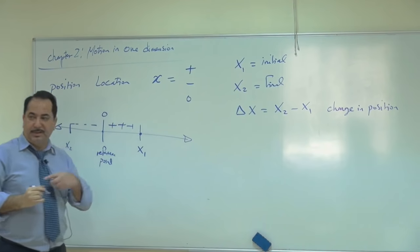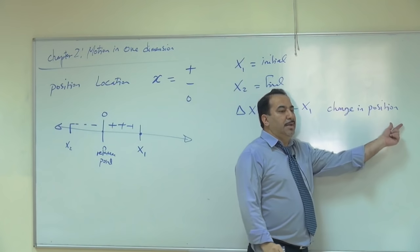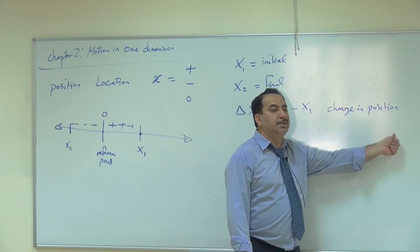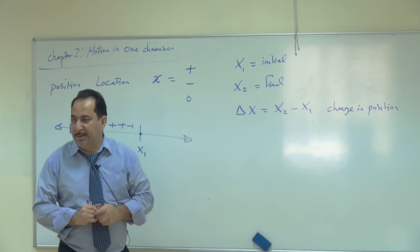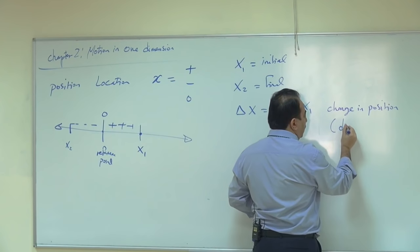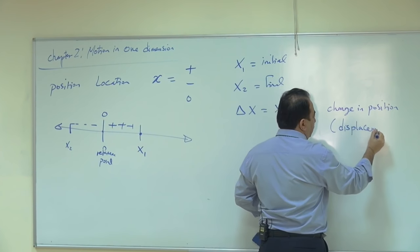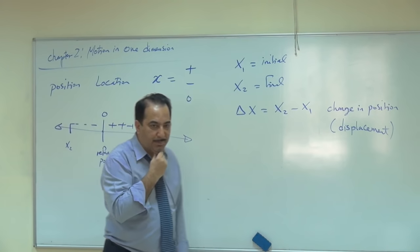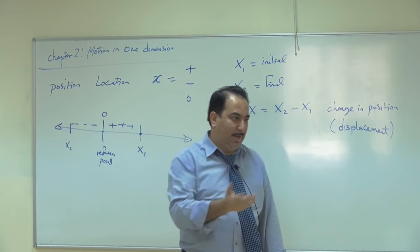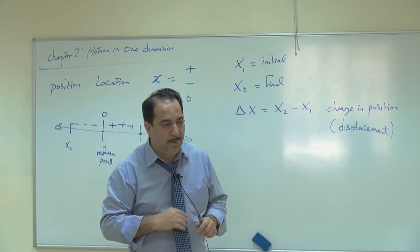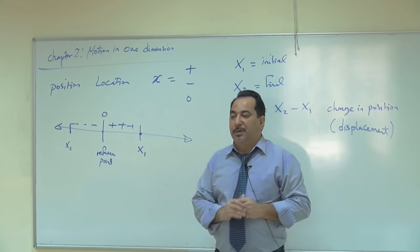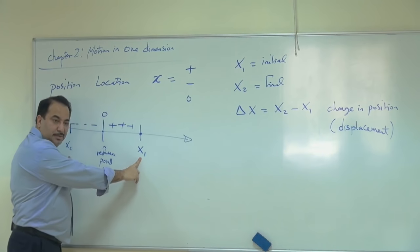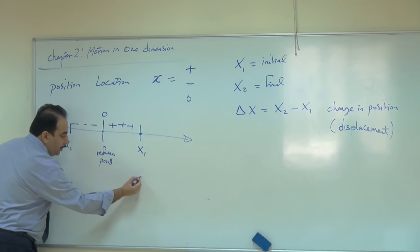This delta x has two names: change in position, or displacement. What's the difference between distance and displacement? Displacement gives you the shortest distance between two points — a straight line. Displacement points from the initial to the final position, with the tail at the start and the head at the end.